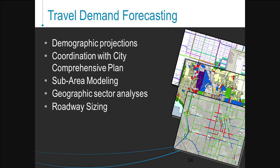Another subtask is the development of a travel demand forecast model. A sub-area model will be developed for Fort Worth, tailored from the NCTCOG regional model but enhanced to consider demographic projections consistent with the Fort Worth Comprehensive Plan, with a more robust and defined roadway network. This model will be used to evaluate all areas of Fort Worth, and most importantly to ensure appropriate roadway sizing as part of the street types development and application.